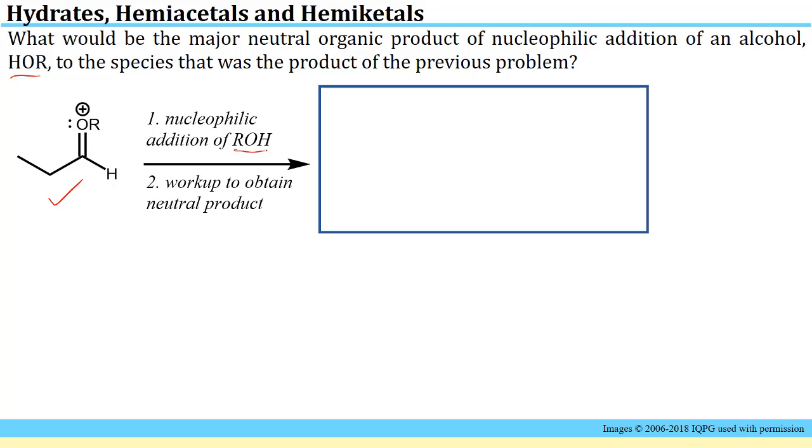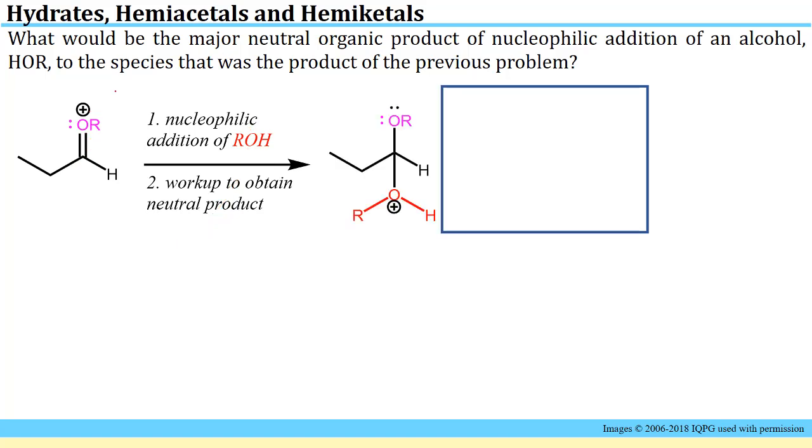It's asking us to do a nucleophilic addition of ROH. We know what the nucleophilic addition step looks like, and then we're going to work this up to get a neutral product. We'll start off by color coding some things. We know that it's asking us to do a nucleophilic addition of this alcohol to the species here. A nucleophilic addition must be added to a pi bond. We're going to want to push electrons towards this O that's positively charged. It certainly has a strong need for electrons to neutralize that. That will get us to this initial species where here is our ROH that we just had as the nucleophile.